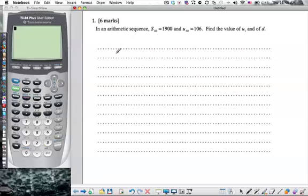So Mr. Rops, how do we start this bad boy? Well, we've got two bits of information there, and we need two variables. So let's make two equations with those two variables. So S40, well that's 1900, which is going to be, using the equation, 40 over 2. That's the n over 2.